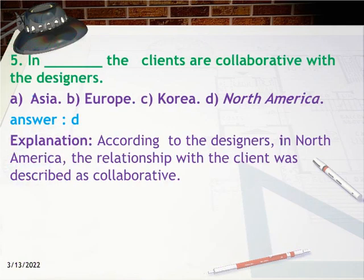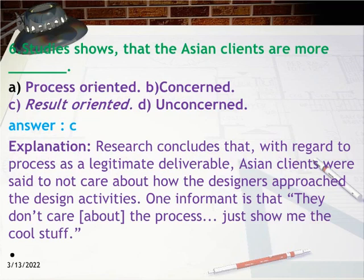Question 5: In which region are clients collaborative with the designers? Answer: D, North America. Explanation: According to designers, in North America the relationship with the client was described as collaborative. Question 6: A study shows that Asian clients are more — answer: C, result oriented.